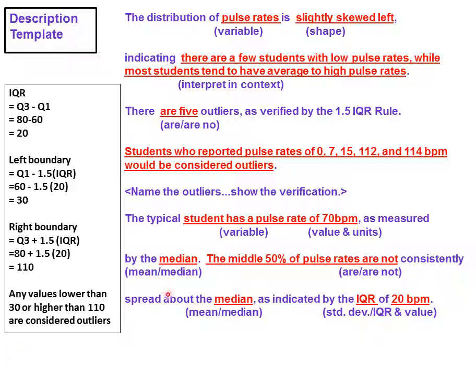The phrasing here with the middle 50 percent of pulse rates describes the IQR in context. I determined that these were not consistently spread based on the value of 20 and understanding the units. A difference of 20 beats per minute in pulse rate is extreme. That is not a low difference. Think about one person who might have a pulse of 90, and a difference of 20 could put them up to a pulse rate of 110 beats per minute. That's a huge difference.